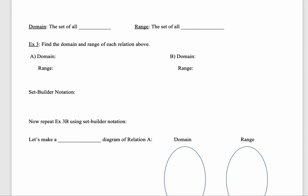Let's look at domain and range. What is domain and what is range? Domain is the set of all inputs, and it's usually associated with the variable X. Range is the set of all outputs, and it is associated with the variable Y.